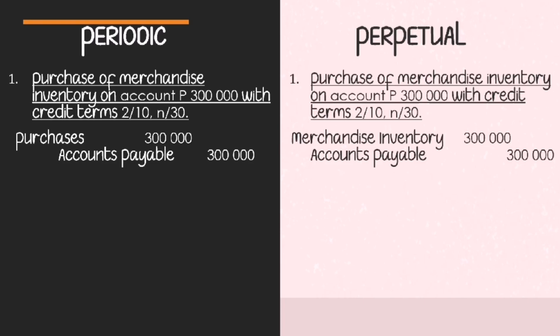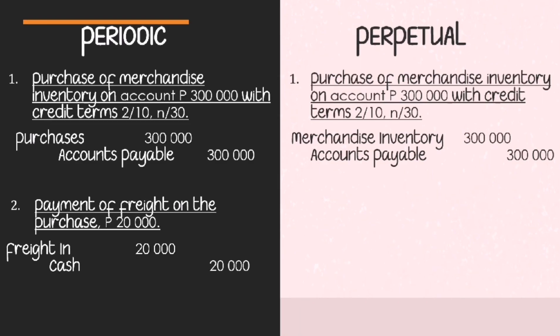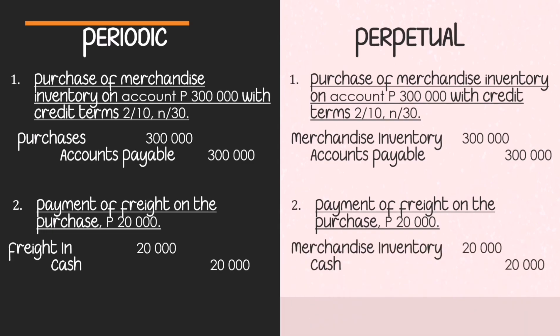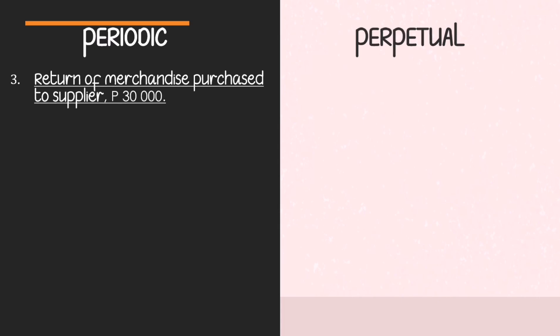Next transaction: payment of freight on the purchase amounting to 20,000. Under the periodic system, we debit Freight In and credit Cash. Remember that freight in is added to purchases to arrive at net purchases. Under the perpetual inventory system, we debit Merchandise Inventory and credit Cash — shipping cost is added directly to merchandise inventory.